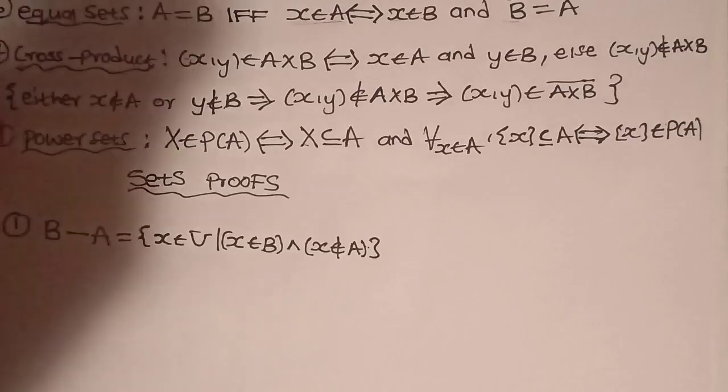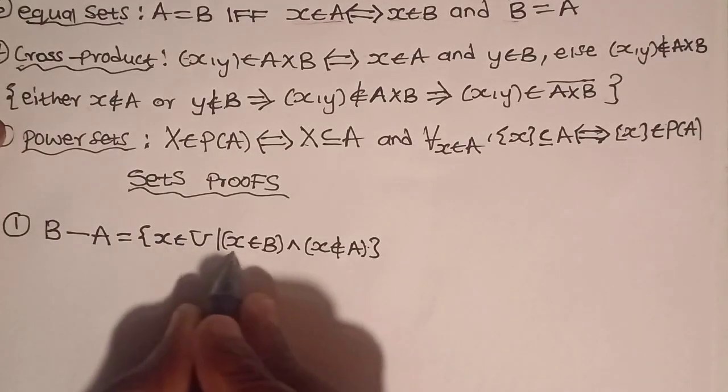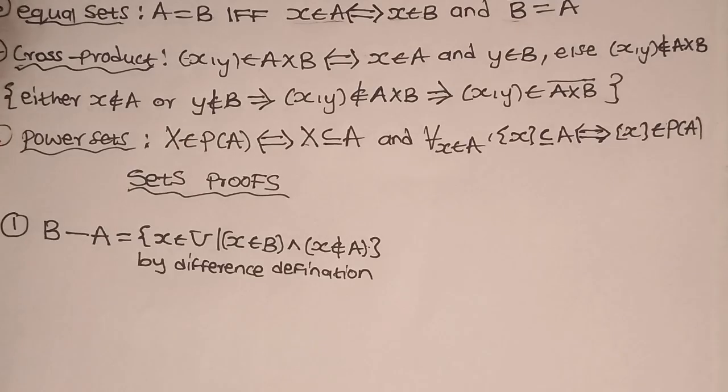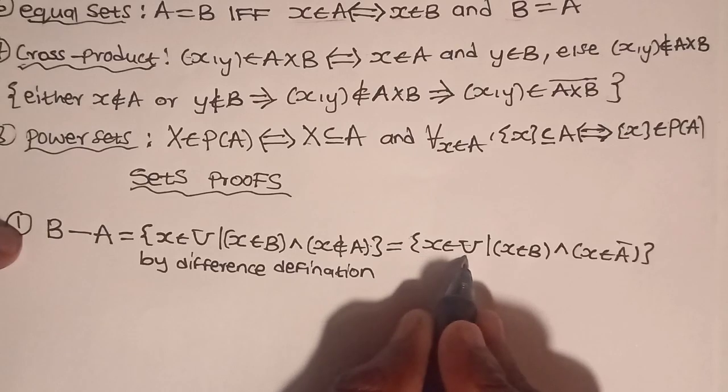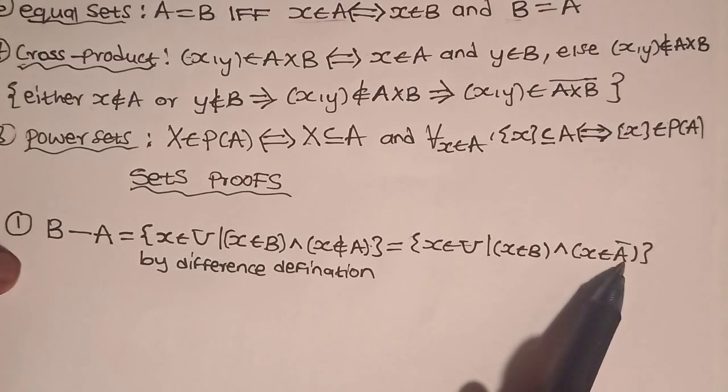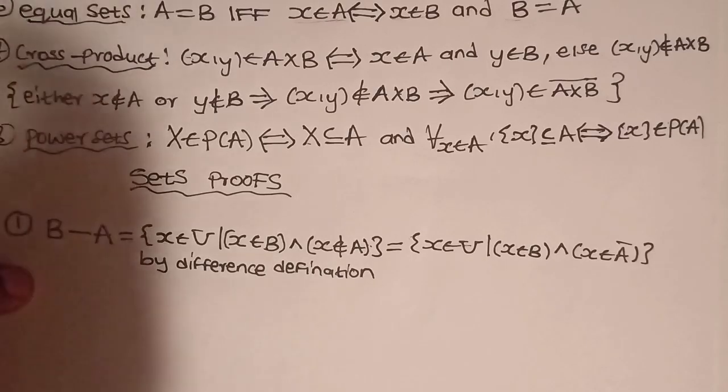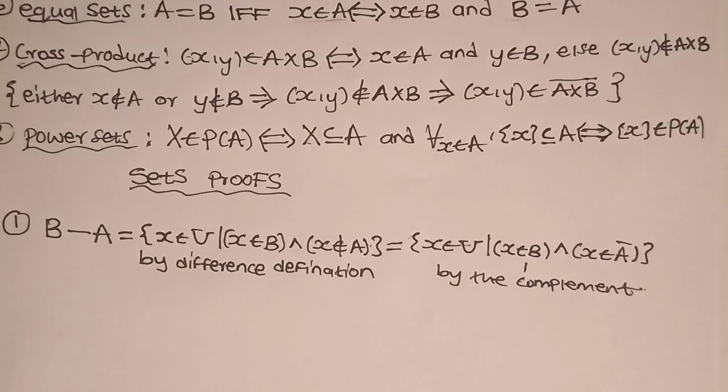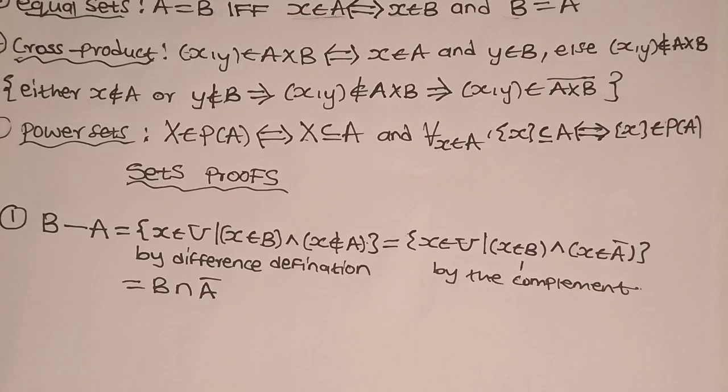B minus A is the same as a set defined by X an element of the universal set such that X is in B and X is not in A. And this is by difference definition, which is the same as X is in B and X is in A complement, by complement definition. Remember, if X is not in A, then it's in A complement. So I said B minus A is equivalent to B intersect A complement. I haven't started proving it, I just tried to correlate using the definitions. It is important for you to recall the definitions while we are proving. They are very much helpful and very much important.